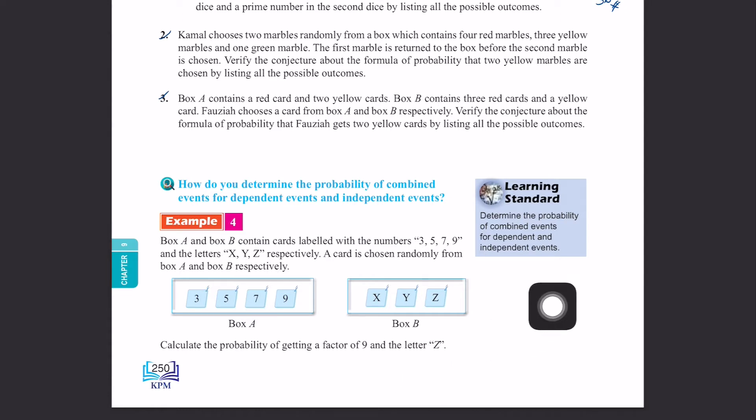So let's see. Probability of getting a factor of 9. What are the factors of 9? Factors of 9 are numbers that can divide 9 exactly, right? So we know that it is 3 and 9. So the first probability is 2 over 4.